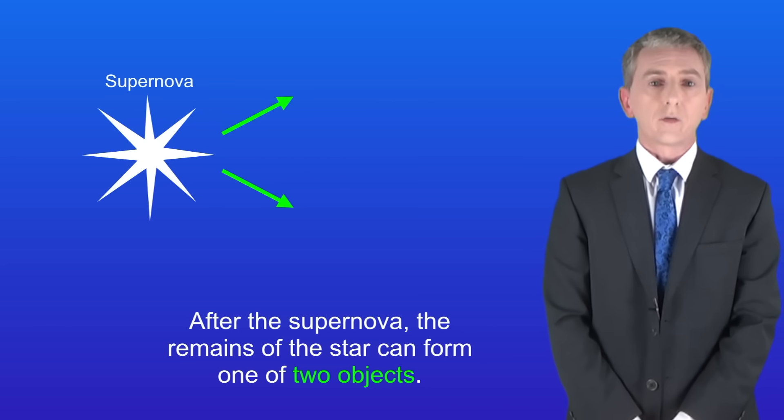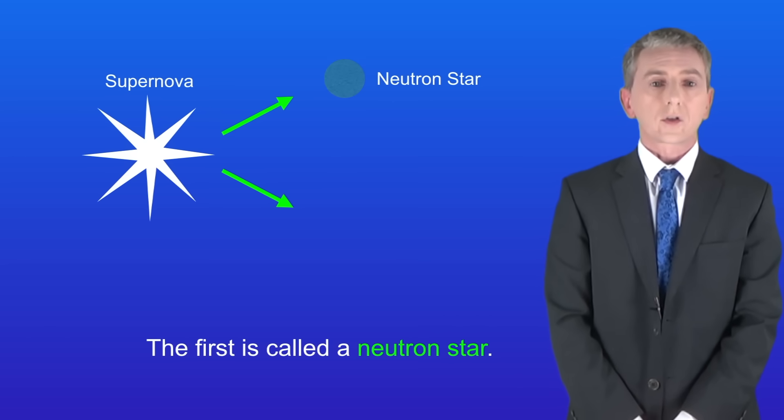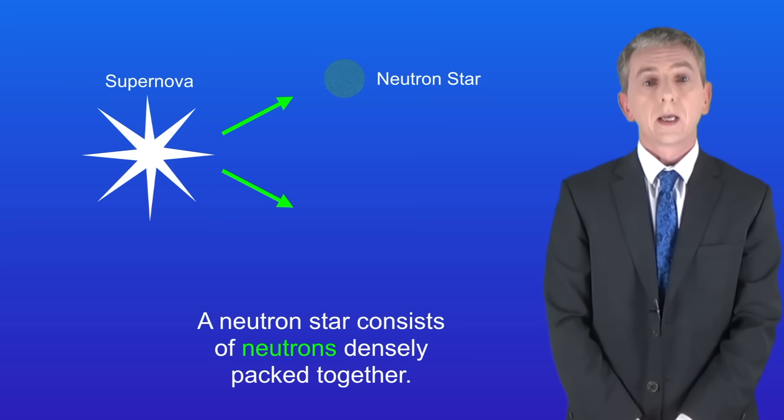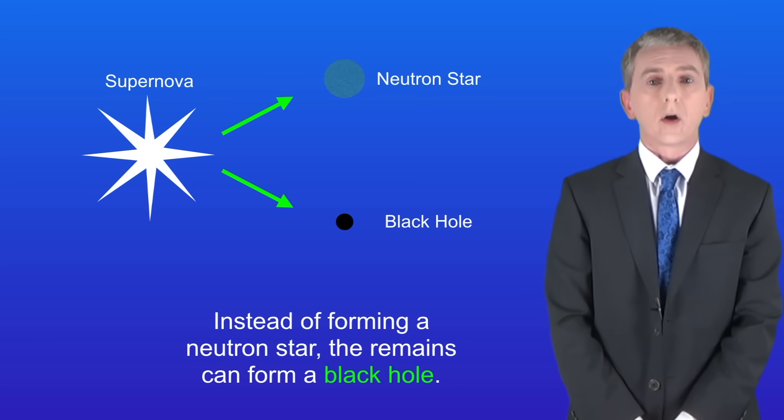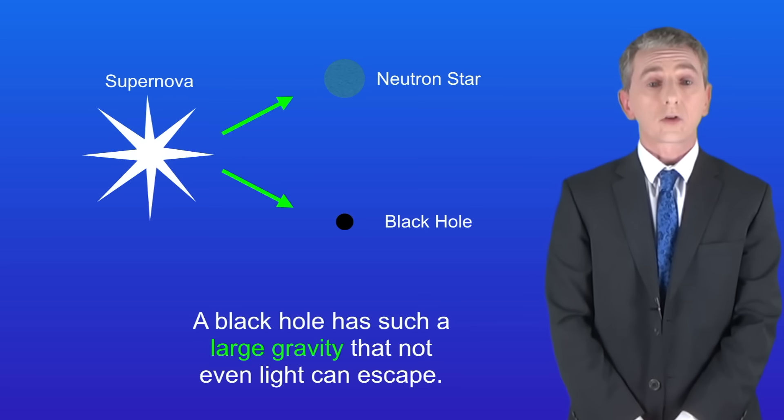After the supernova, the remains of the star can form one of two different objects. The first is called a neutron star, which consists of neutrons densely packed together. Instead of forming a neutron star, the remains can form a black hole. A black hole has such a large gravity that not even light can escape.